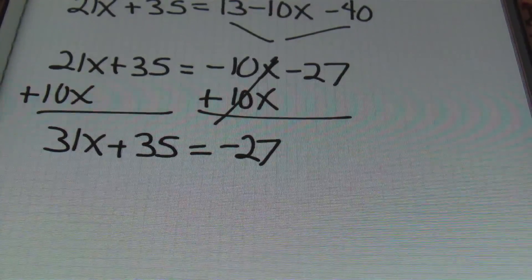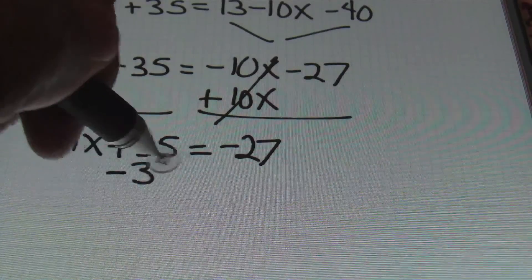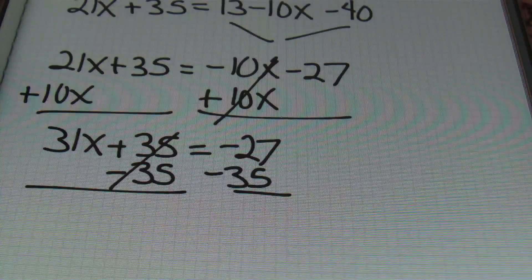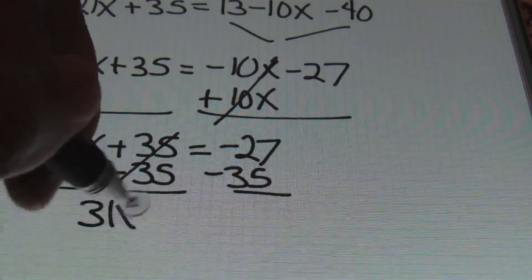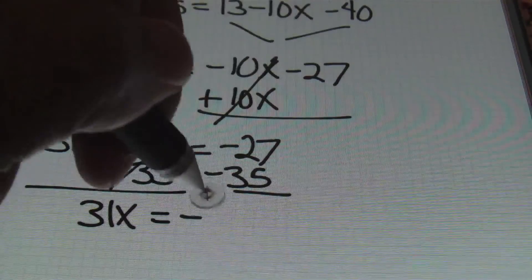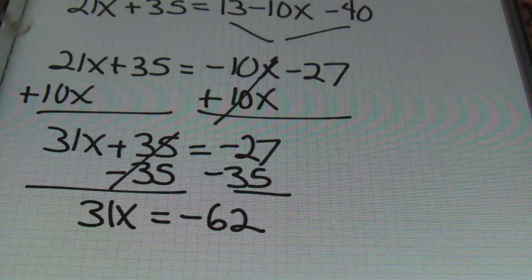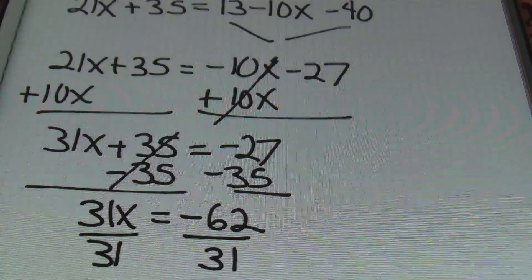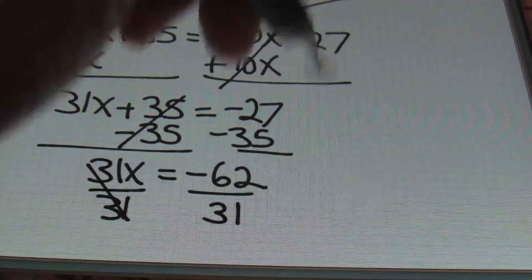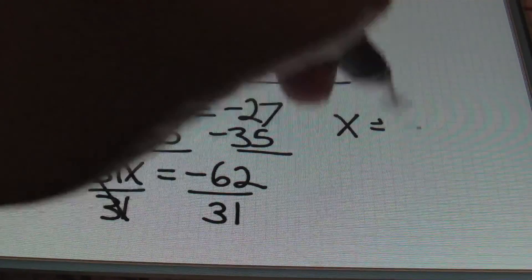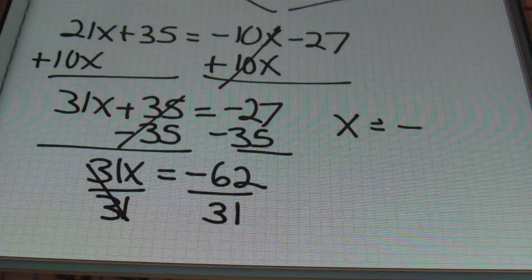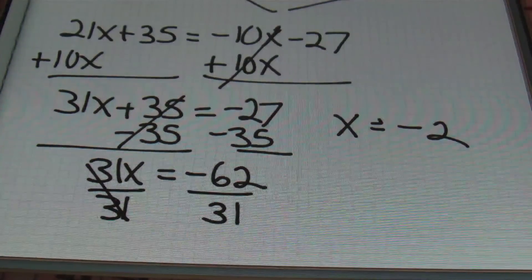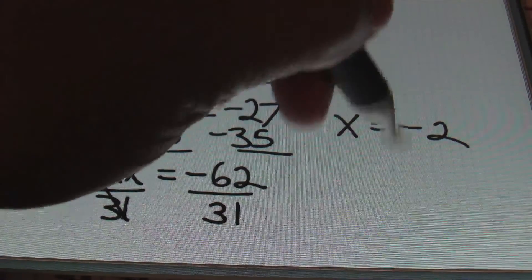From here, I'll subtract 35 from both sides. After doing so, the 35s cancel on the left, leaving 31x equals negative 62. Dividing both sides by 31, the 31s simplify to 1x. Negative 62 divided by 31 gives me negative 2. So x equals negative 2. Done and done, ladies and gentlemen.